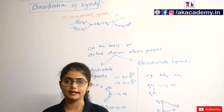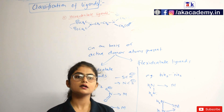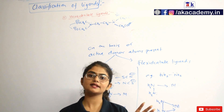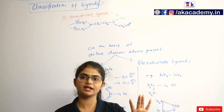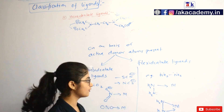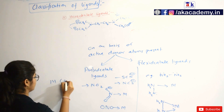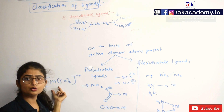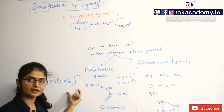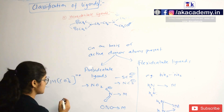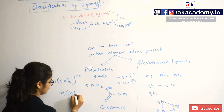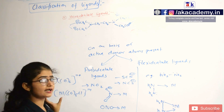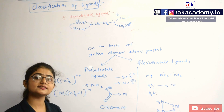That was about the types and classification of ligands. There are also two types of complexes: homoleptic and heteroleptic. Homoleptic complexes are those in which only one type of ligand is attached to the metal — for example, a metal with only carbonyl ligands. If more than one type of ligand is attached to the metal, we call it a heteroleptic complex.